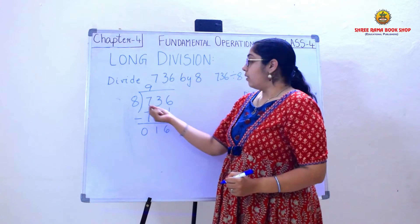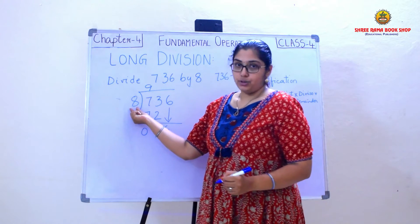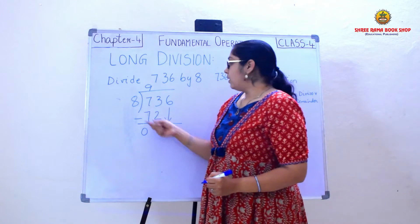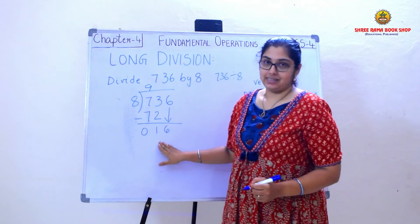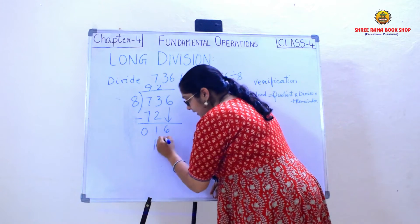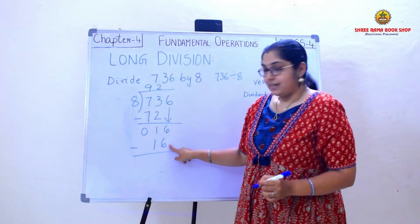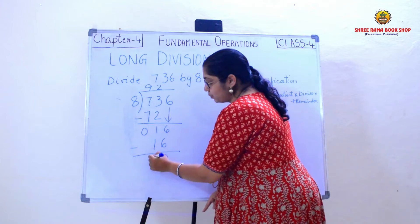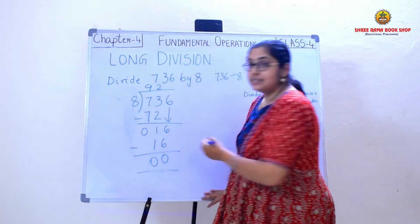So 16 — how many times does 8 go into it? I need to check or take the nearest number. 8 twos are 16, so 2 times. So again I need to subtract. Then 6 minus 6 is 0, and 1 minus 1 is 0. So the remainder is 0.